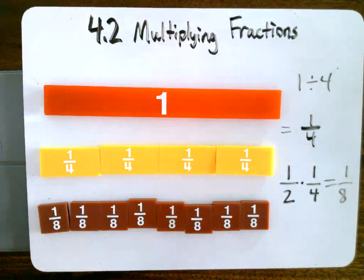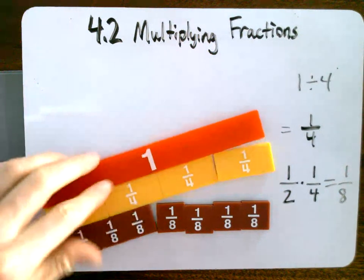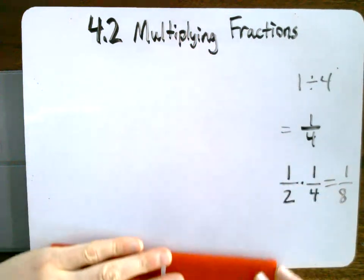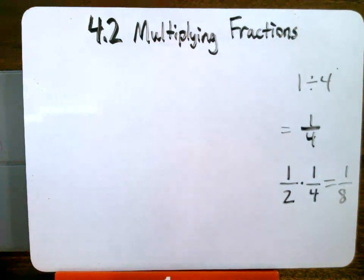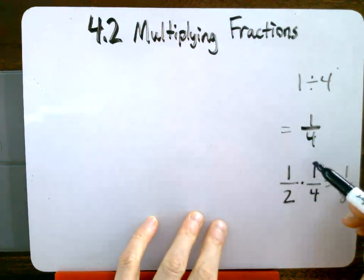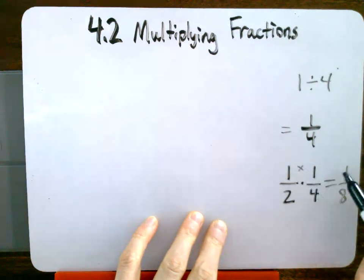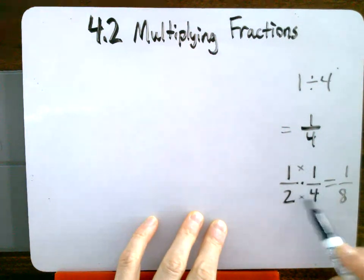Okay, so our general rule here is when we are multiplying fractions, I'm going to move these off now. We are simply going to multiply the numerators and the denominators, right? So if you look at this one here, 1 times 1 equals 1, 2 times 4 equals 8.